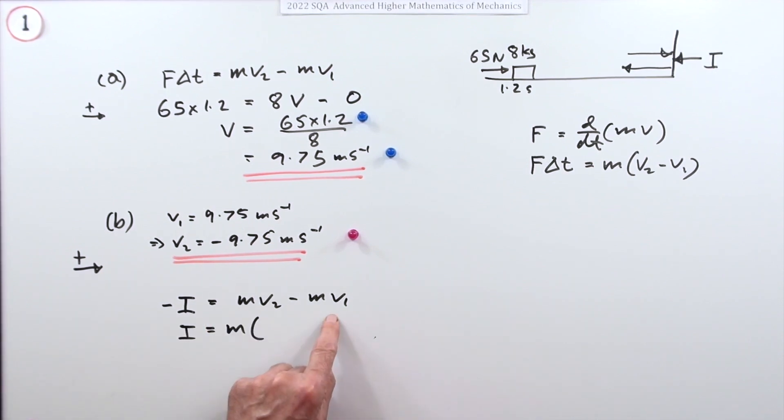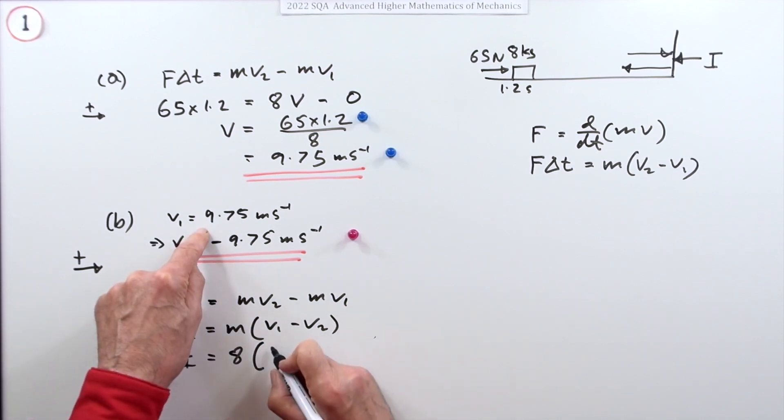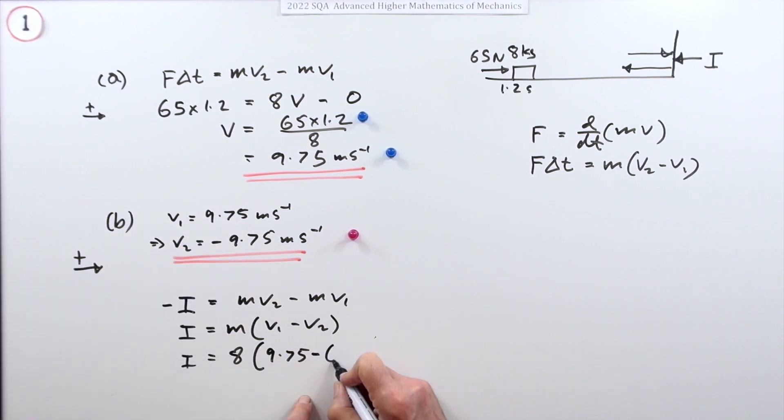So I is going to be 8 times v1, that was the 9.75, minus the negative 9.75. So that's just two lots of 9.75. Multiplying that out should give you the impulse.